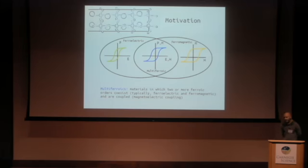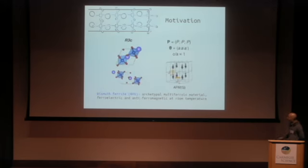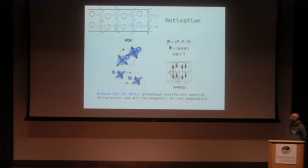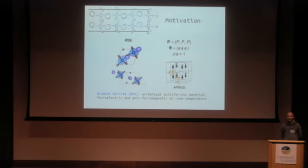As any of you should know, multiferroics are materials in which two or more ferroic orders coexist. Normally these are ferromagnetism and ferroelectricity, which remain coupled to some extent. One very typical example of a multiferroic material is bismuth ferrite. The ground state is a rhombohedral R3C phase, in which the electrical polarization is oriented along the [1-1-1] direction, and we have out-of-phase oxygen-octahedral rotations along the pseudo-cubic axis.